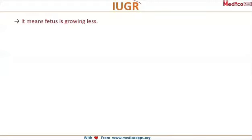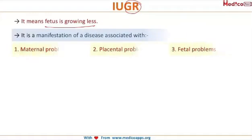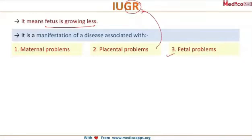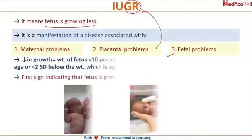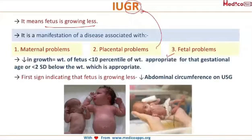Intrauterine growth restriction means the fetus is growing less than expected. IUGR is a manifestation of disease associated with maternal problems, placental problems, or fetal problems — any of these problems can result in IUGR. Now, coming to the proper definition of IUGR: if the weight of the fetus is...